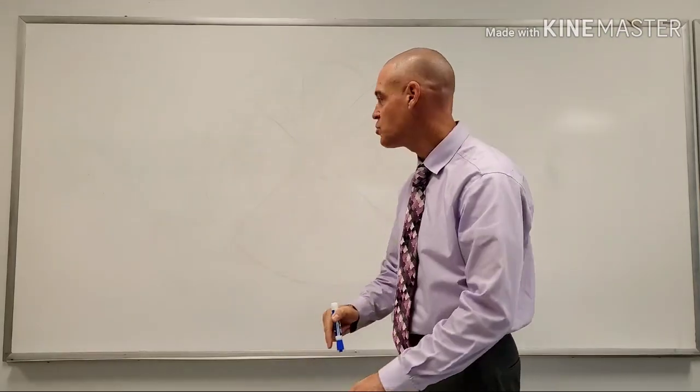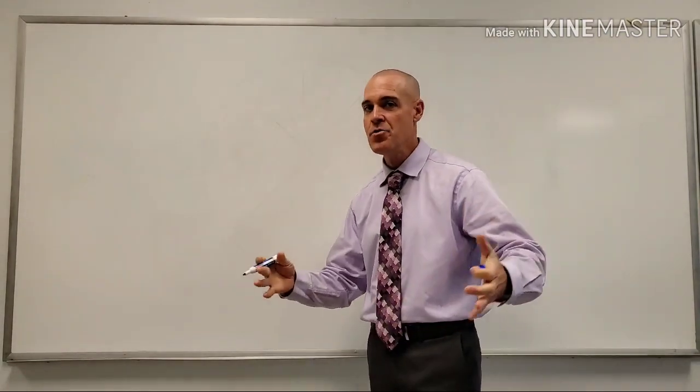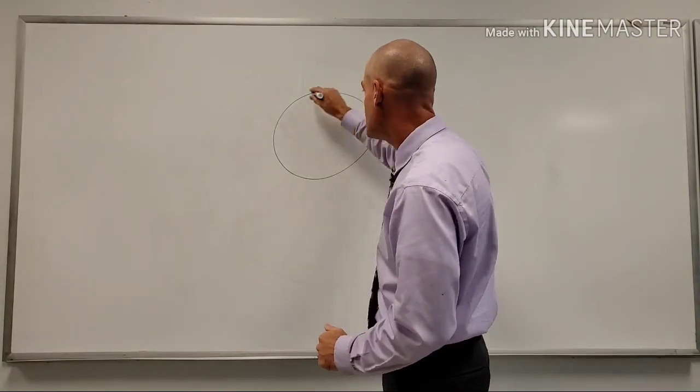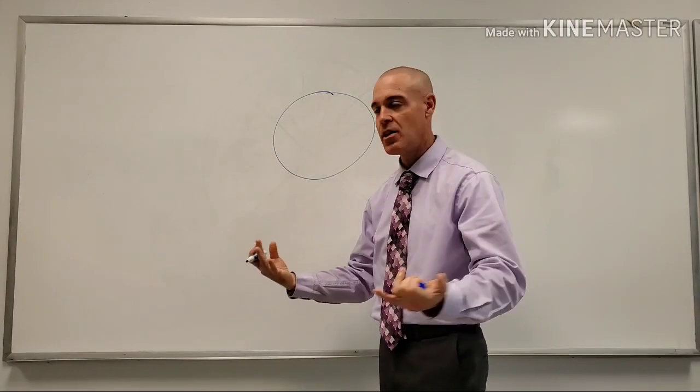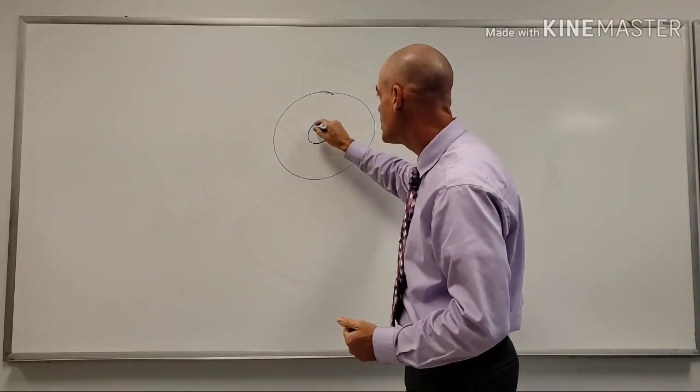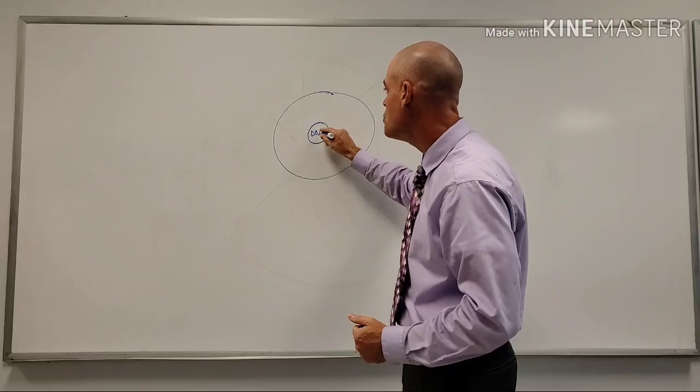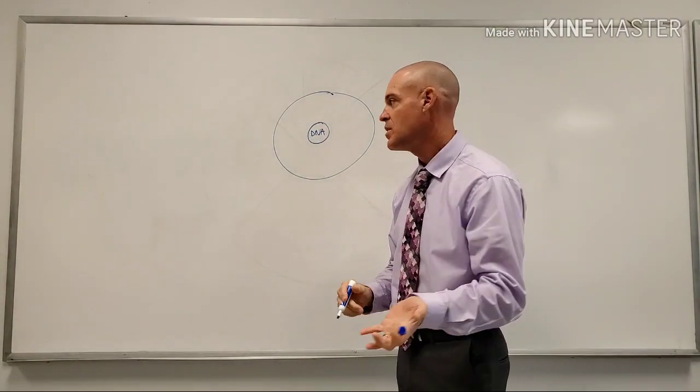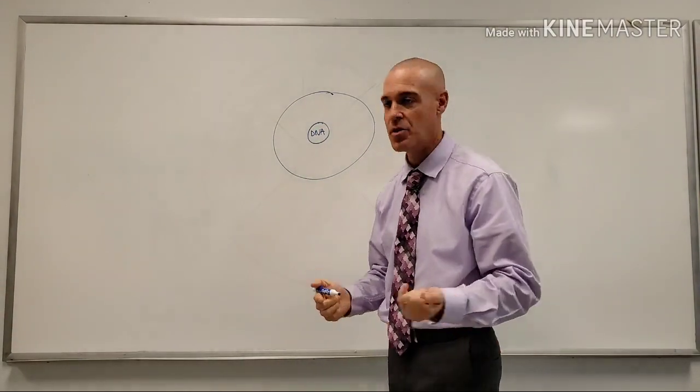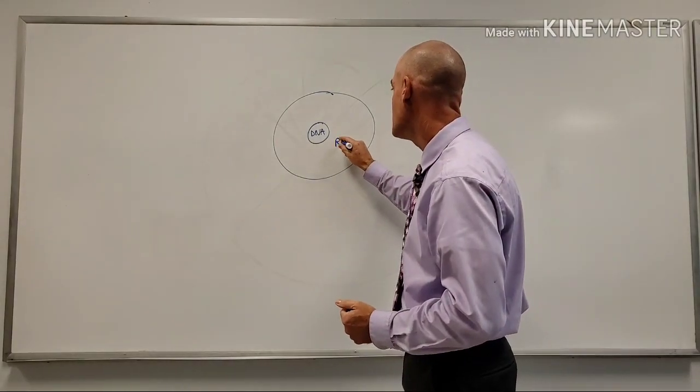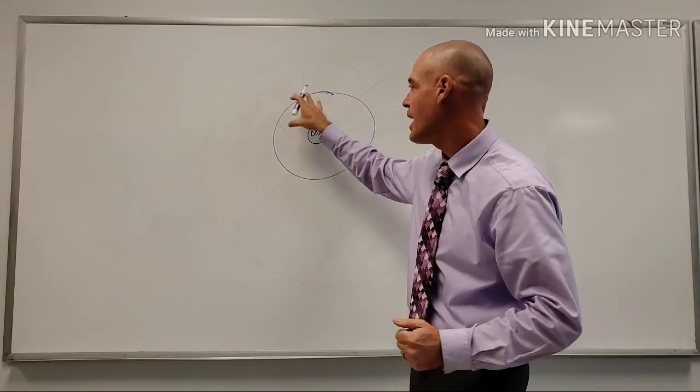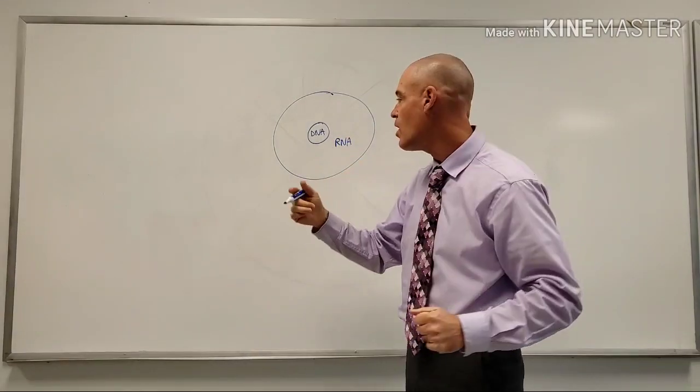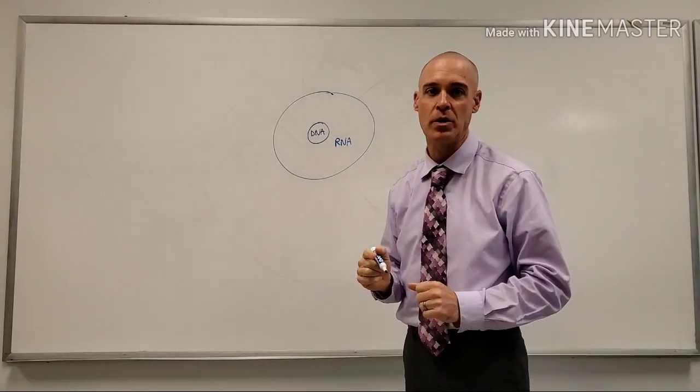So let's talk about some basic things real fast. Many of you might know this already, but inside the cell, where is DNA located? Of course, DNA is going to be located in the nucleus of the cell. Now the question is, where is RNA located? RNA is going to be located in the cytoplasm, that area, still within the cell but not inside the nucleus.